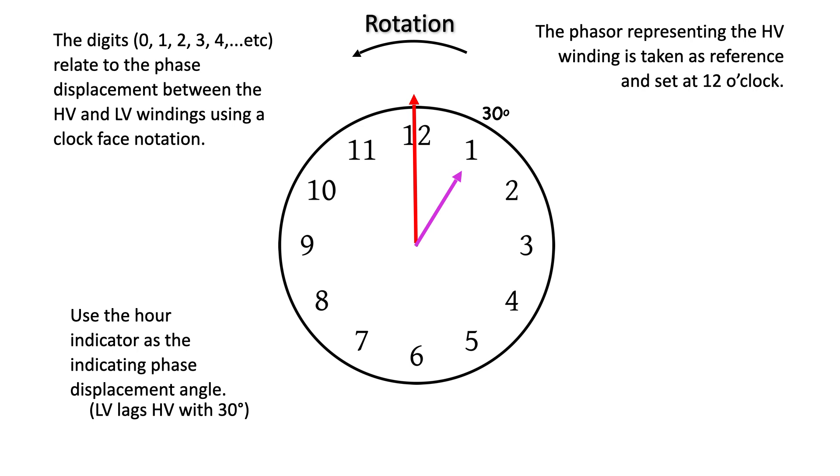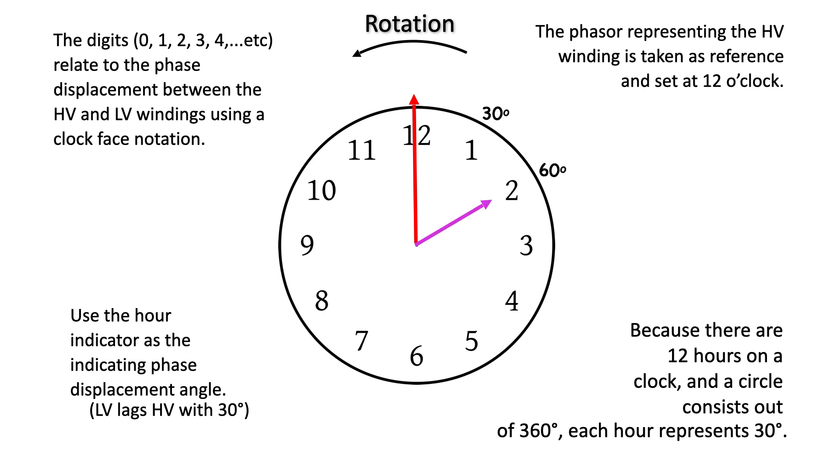Because there are 12 hours on the clock, and a circle consists of 360 degrees, each hour represents 30 degrees. For example, 2 o'clock is 60 degrees, 3 o'clock is 90 degrees, 4 o'clock is 120, 5 is 150, 6 o'clock is 180.